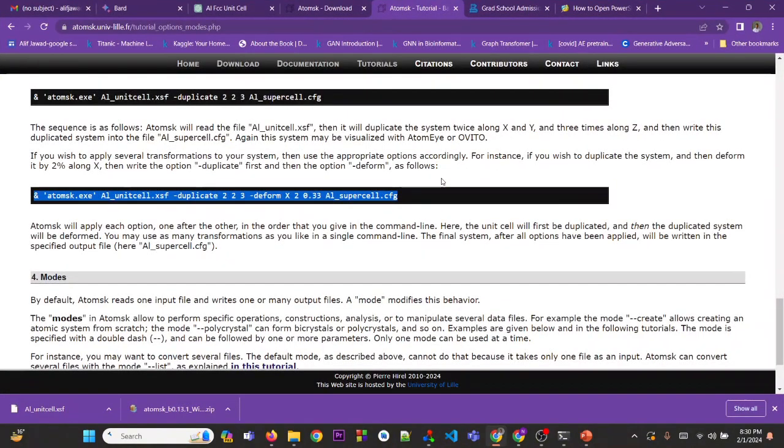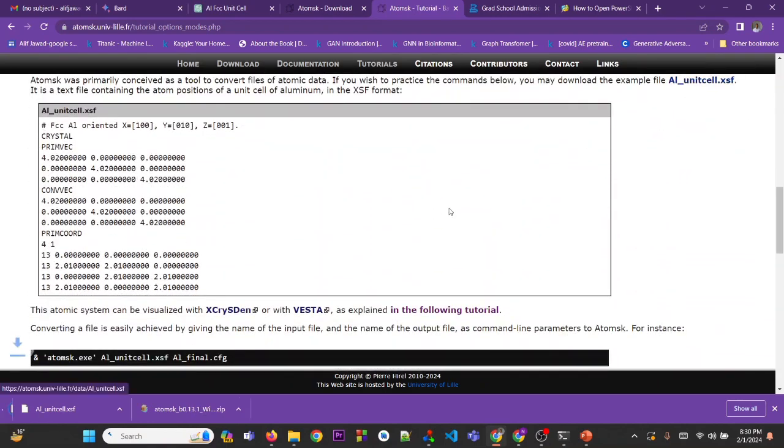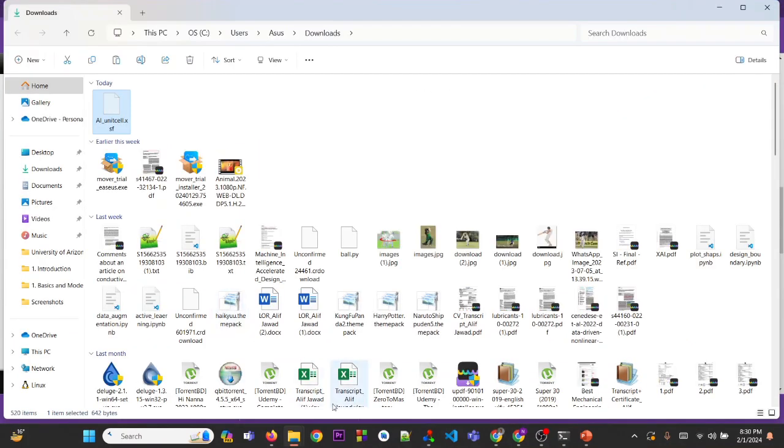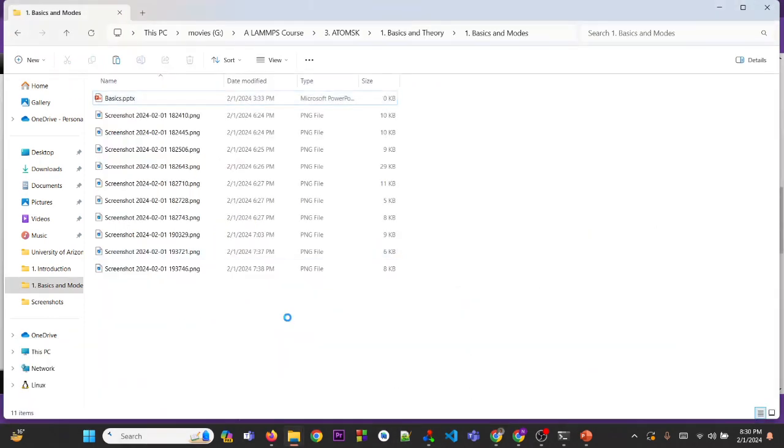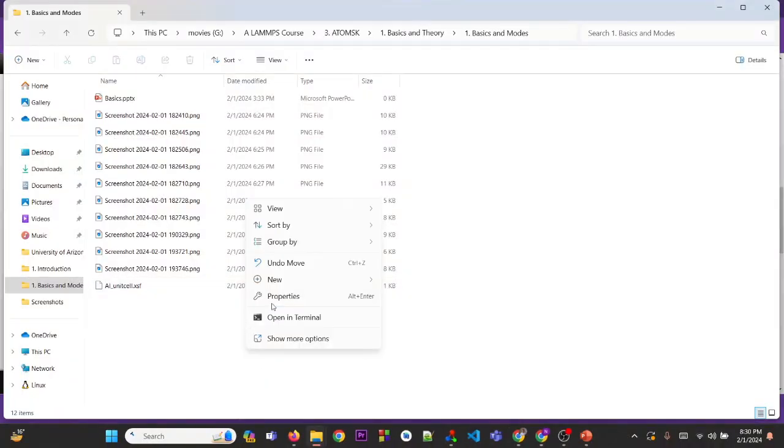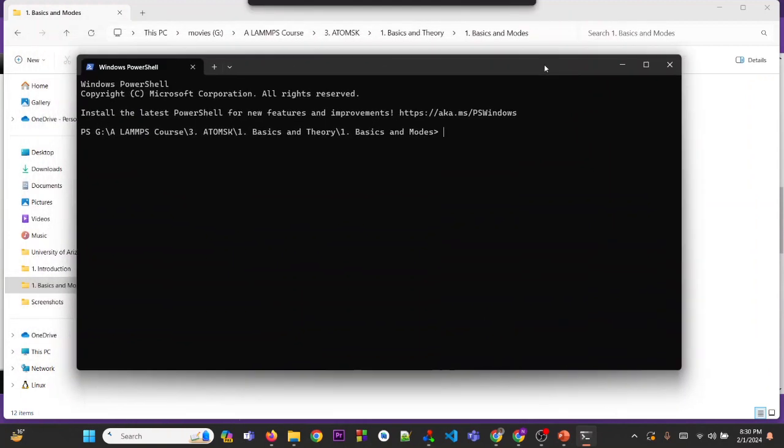Here I am opening the tutorial page for ATOMSK. We are downloading the initial file. You can also create this initial file by yourself, which I will perhaps keep the code in the description of this video. I am copying it to my folder here. Then you can open the Windows PowerShell. I hope you have already installed ATOMSK.